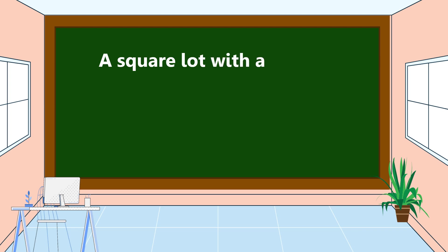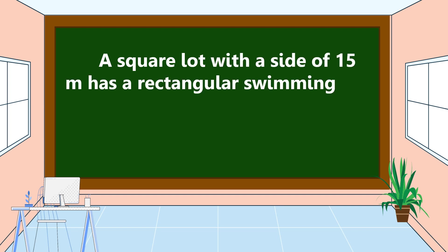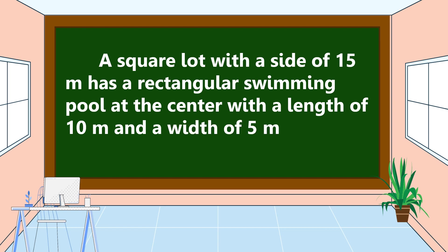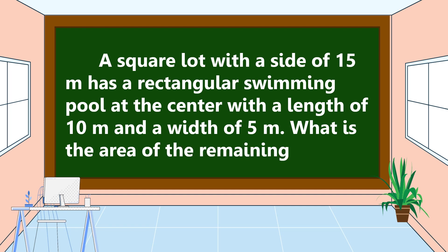This is our second problem. A square lot with a side of 15 meters has a rectangular swimming pool at the center with a length of 10 meters and a width of 5 meters. What is the area of the remaining lot? Our second problem is a non-routine problem. To solve this, we're going to use an illustration.